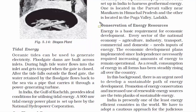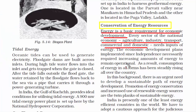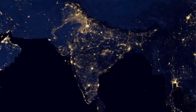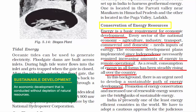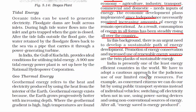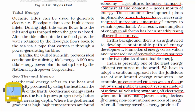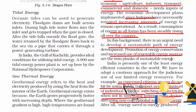Moving to conservation of energy resources: energy is a basic requirement for economic development. Major sectors like agriculture, industry, transport, commercial, and domestic all need energy inputs. Since independence, consumption of energy in all forms has been steadily rising across the country. We need to develop a sustainable path of energy development that meets the present demand and saves for future generations. Increasing the use of renewable energy sources is a good option. Some ways to save energy include using public transport instead of individual vehicles, switching off electricity when not in use, using power-saving devices, and using non-conventional sources like wind and solar.